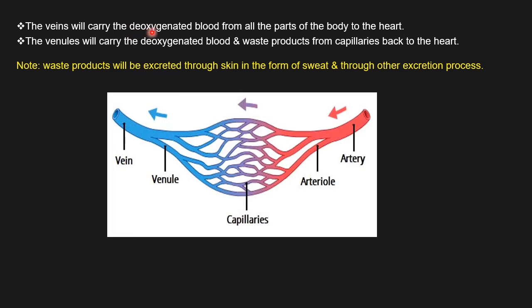The veins carry deoxygenated blood — blood which contains carbon dioxide — from all parts of the body back to the heart. In the diagram we can see the full flow: oxygenated blood flows through the artery, then into arterioles, then into capillaries where diffusion takes place. Oxygen enters the tissues, carbon dioxide enters the blood, and nutrients enter the tissues while waste products enter the blood. Then the blood carrying carbon dioxide and waste products enters the venules, then the veins, and finally goes to the heart.